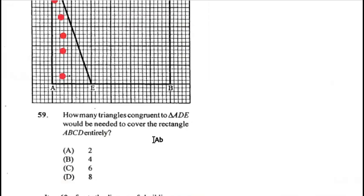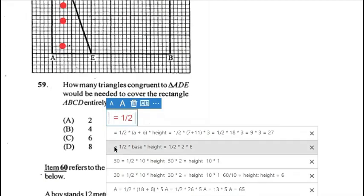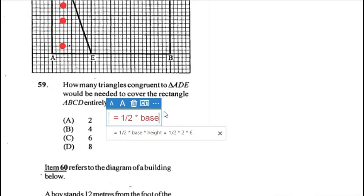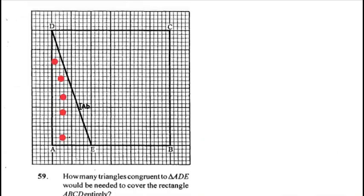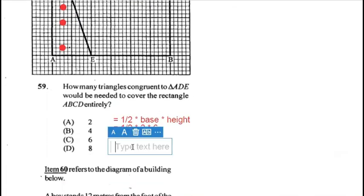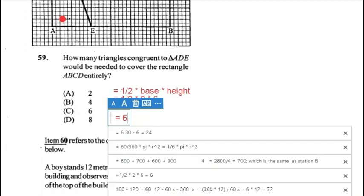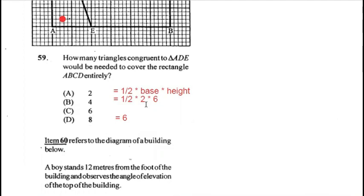Question 59: how many triangles congruent to triangle ADE are needed to cover rectangle ABCD? Area of triangle = ½ × base × height = ½ × 2 × 6 = 6. The number of triangles needed equals the area of the rectangle divided by the area of one triangle — working through the calculation gives answer C.